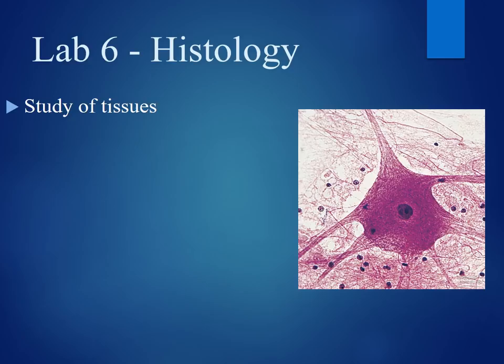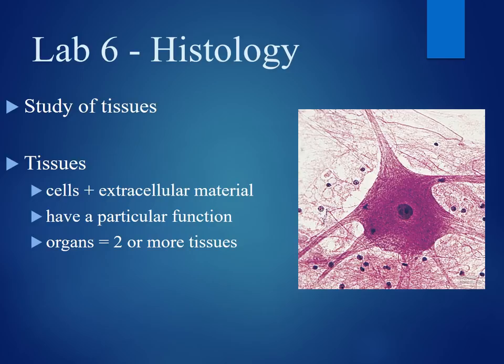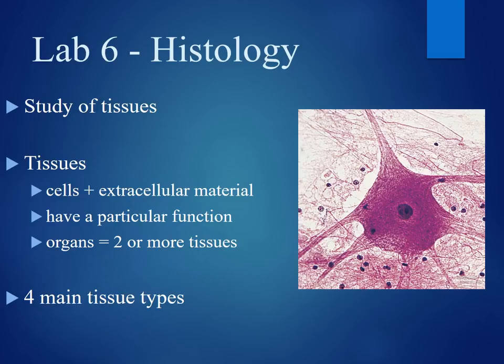This is the A.V. lecture for Lab 6. Today we're going to be discussing histology, which is the study of tissues. Tissues are made up of cells, which are the living component of tissues, as well as extracellular material, which are non-living components of tissues. These could be proteins or other structural materials. Tissues have a particular function, and when two or more tissues work together, they form an organ.